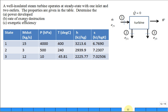A well-insulated steam turbine operates at steady state with one inlet and two outlets. The properties are given in the table. We got state one listed, state two listed, state three listed.